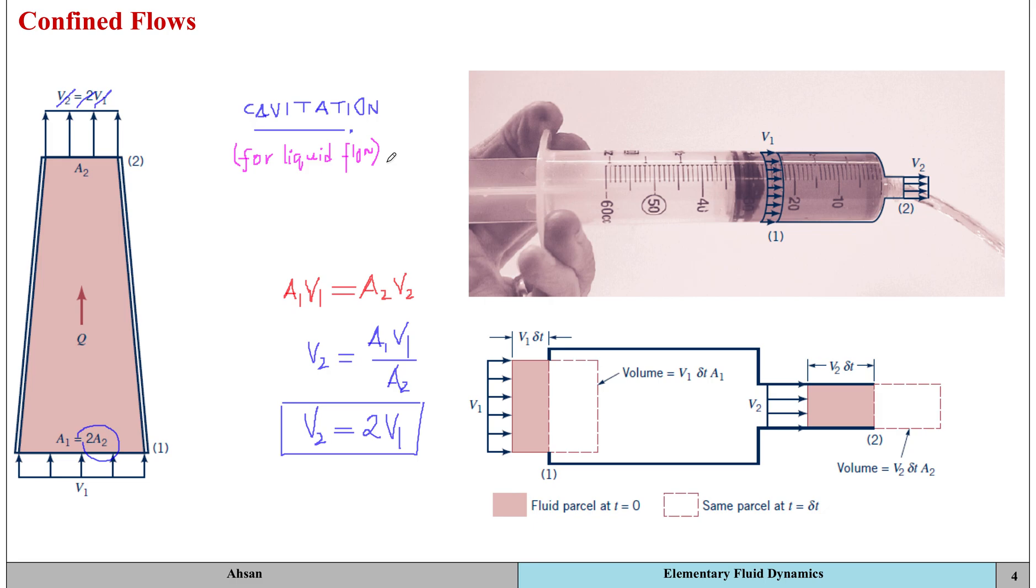This phenomena of cavitation could be a dangerous situation if it occurs, for example, for a propeller blade or within nozzles, because cavitation takes place when the liquid pressure is reduced to the vapor pressure. It can be a potentially dangerous situation for liquid flow.